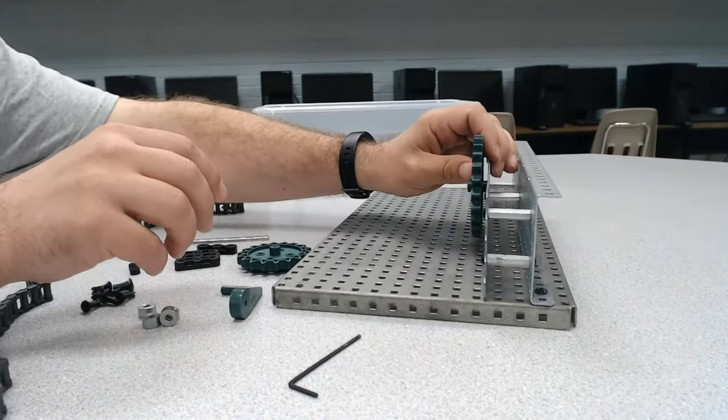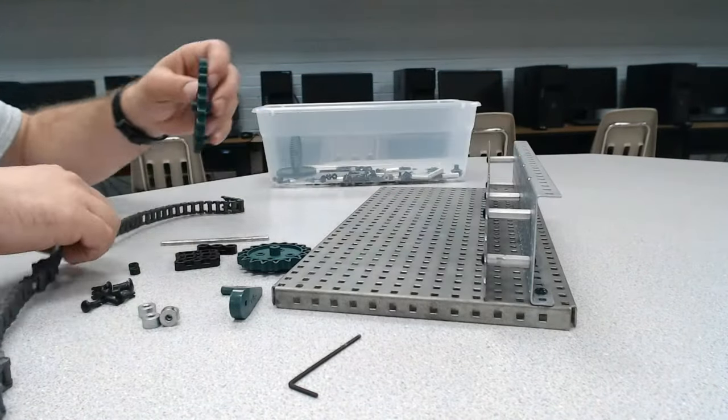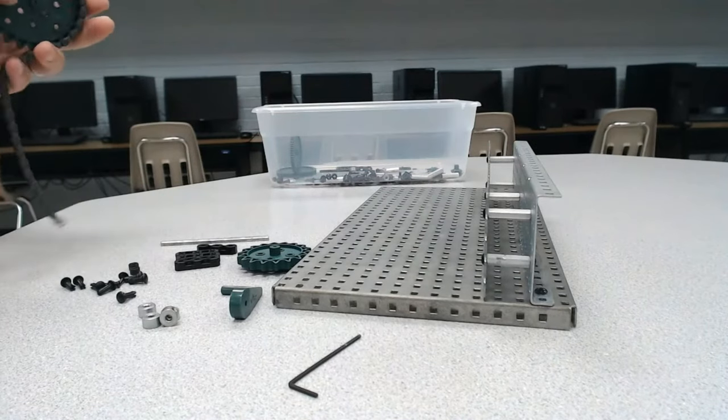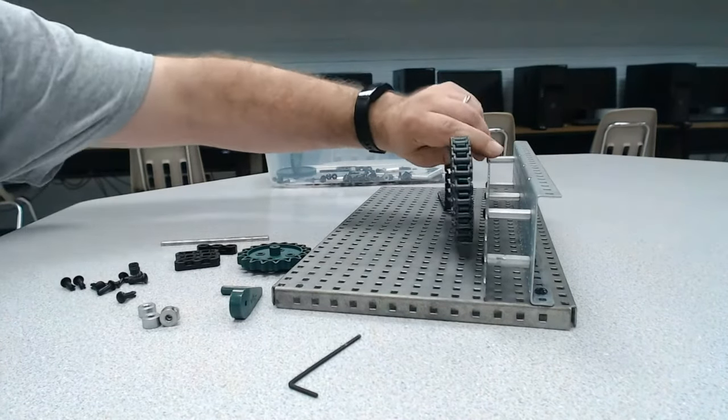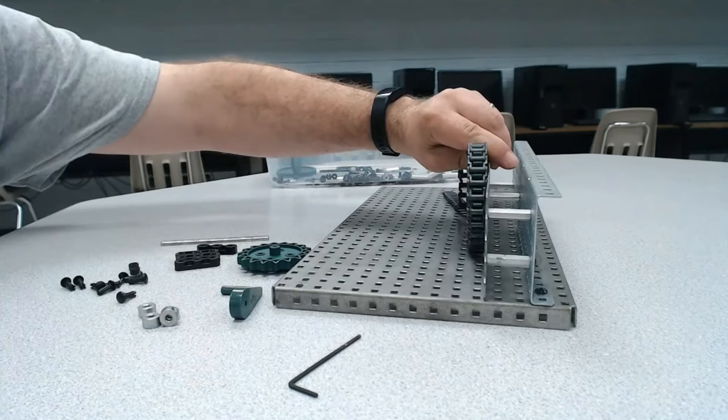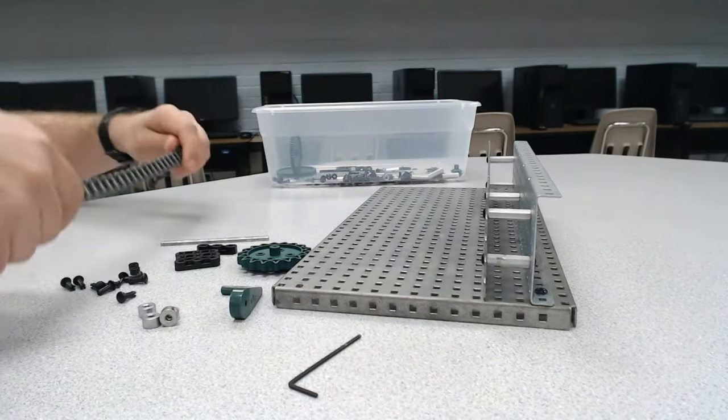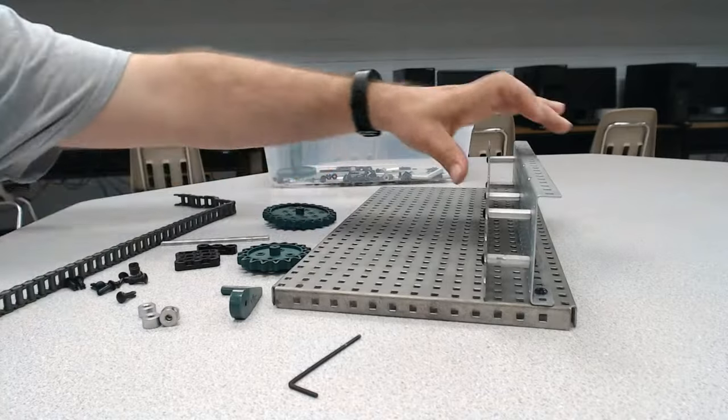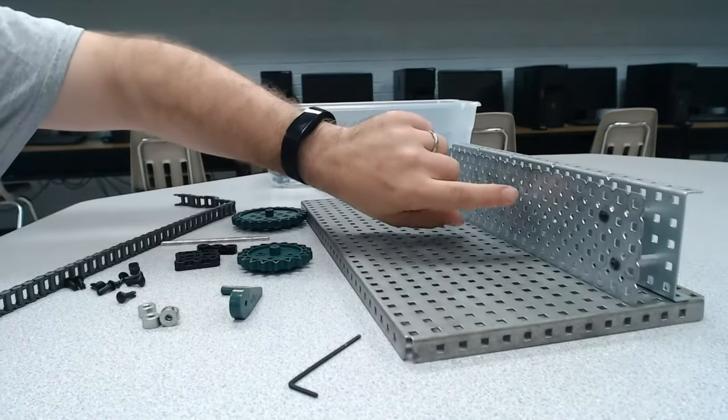But when we attach the chain to that sprocket, we can see that the chain is right up against the metal. So to reduce friction on the chain, I'm going to use these spacers to help create more of a gap.